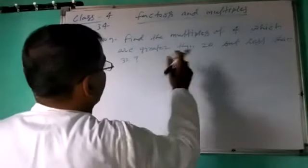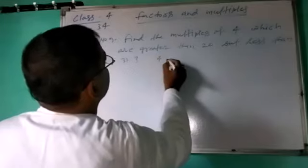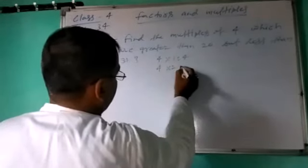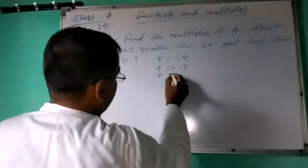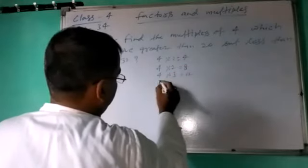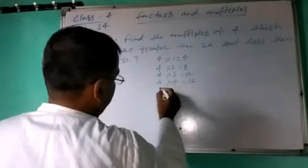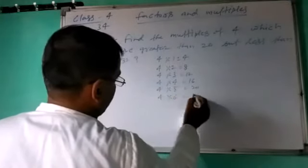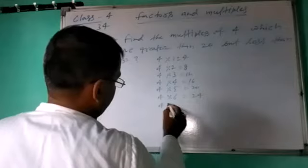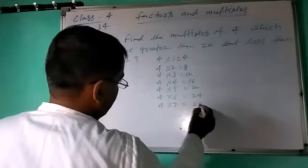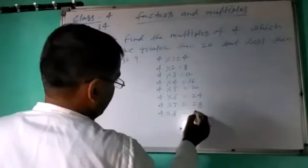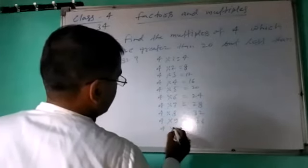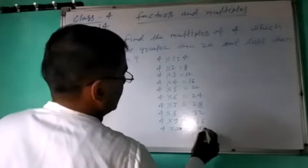First of all, we write table of 4: 4×1 equals 4, 4×2 equals 8, 4×3 equals 12, 4×4 equals 16, 4×5 equals 20, 4×6 equals 24, 4×7 equals 28, 4×8 equals 32, 4×9 equals 36.